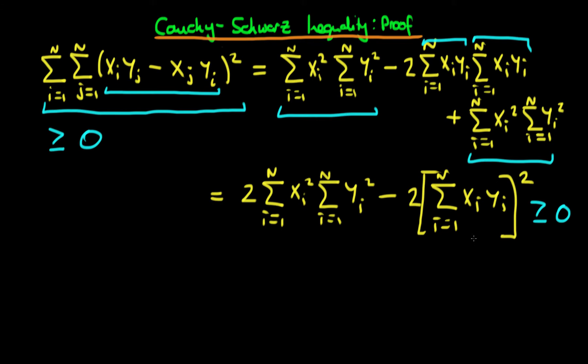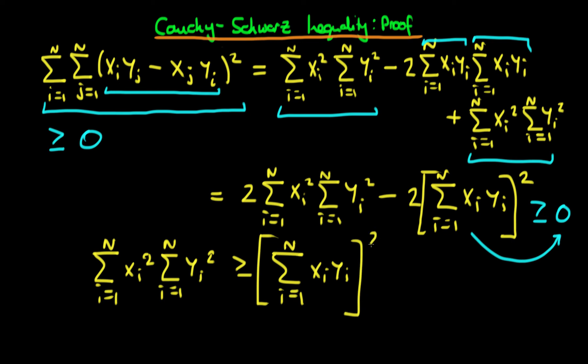Then what we do is we take this term over to the right-hand side, and then we just get left with, if we cancel the 2s, we get the sum from i equals 1 to n of xi squared times the sum from i equals 1 to n of yi squared must be greater than or equal to the sum of i equals 1 to n of xi times yi, and then we need to square this entire right-hand side.